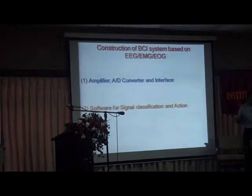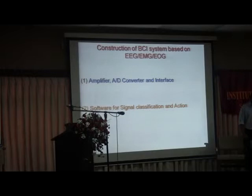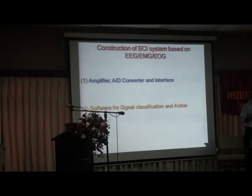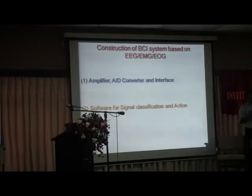The part I am going to describe is the construction of a brain-computer system based on EEG, EMG, and EOG. The major demonstration today uses EOG and EMG because the EEG software part is not completed yet. To have a BCI system we need two things: hardware — consisting of an amplifier, analog-to-digital converter, and computer interface — and software, which takes the signal, recognizes it, and does whatever we ask.